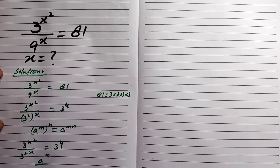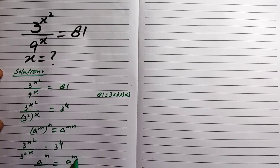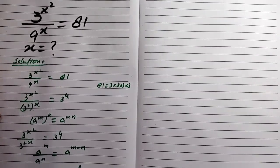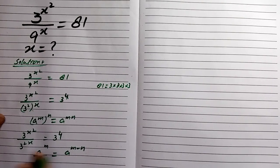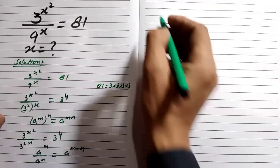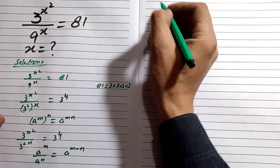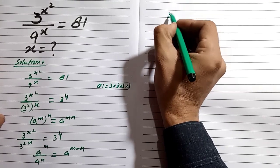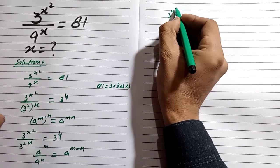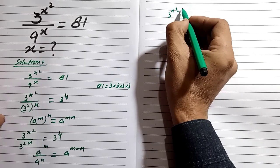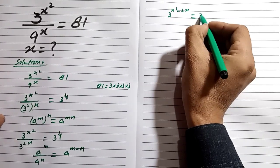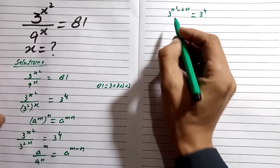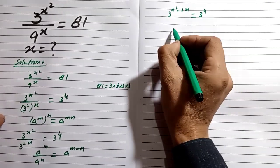In this equation we can use the exponent rule a^m divided by a^n which is equal to a^(m minus n). Applying this rule, we can write 3^(x² minus 2x) which is equal to 3 to the power 4.